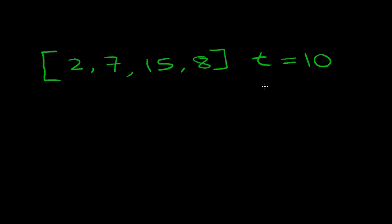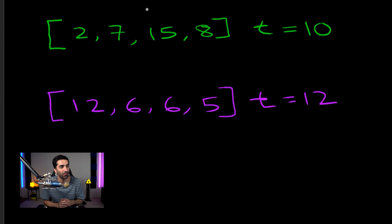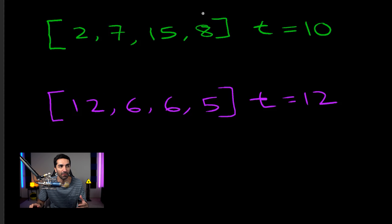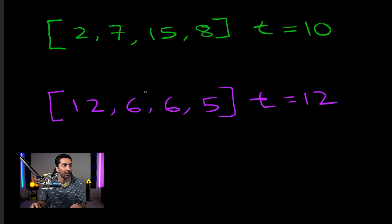So let's use an example problem for this demo. This problem is called TwoSum. Basically, you're given an array of numbers and a target number, and you need to figure out whether or not two numbers exist in the array that add up to the target number. On the top example, we have an array of four elements with a target of 10 — two and eight add up to 10, so this returns true. In the second example, we see that six plus six adds up to 12, so this returns true as well.